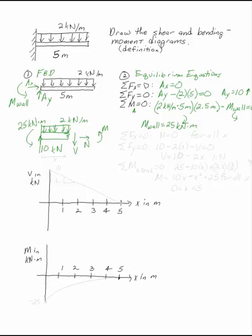The sum of the forces in X tells me that N is equal to 0, and that's going to be true for all X. The sum of the forces in Y, I have 10 up, and I have minus 2 times, now X, because this is only X of the beam. It's only a bit of the beam. And I have minus V.